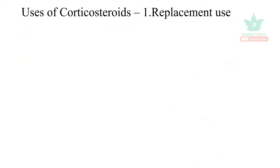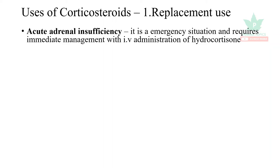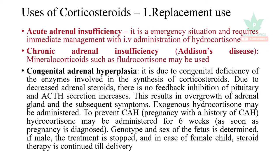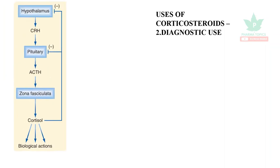The uses of corticosteroids include four important categories. First, replacement use: acute adrenal insufficiency is an emergency managed with IV administration of hydrocortisone. Chronic adrenal insufficiency is Addison's disease, where mineralocorticoids such as fludrocortisone may be used. Congenital adrenal hyperplasia (CAH) is due to congenital deficiency of enzymes for corticosteroid synthesis; exogenous hydrocortisone may be administered. To prevent CAH, as soon as pregnancy is diagnosed, steroids are administered for six weeks. Then the genotype is determined — if male, treatment is stopped; if female, steroid therapy is continued till delivery.